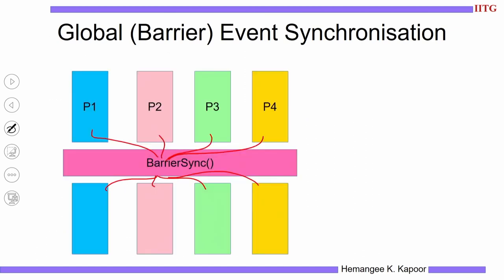How do you implement this? This is a centralized software barrier using a counter and a flag. We concentrate on implementing the pink barrier — how do we know all processes have finished so we can trigger them to continue with phase two? I can call this phase one and phase two. Once phase one of everybody finishes, only then phase two of others can begin. We need to know the count — how many processes have finished.